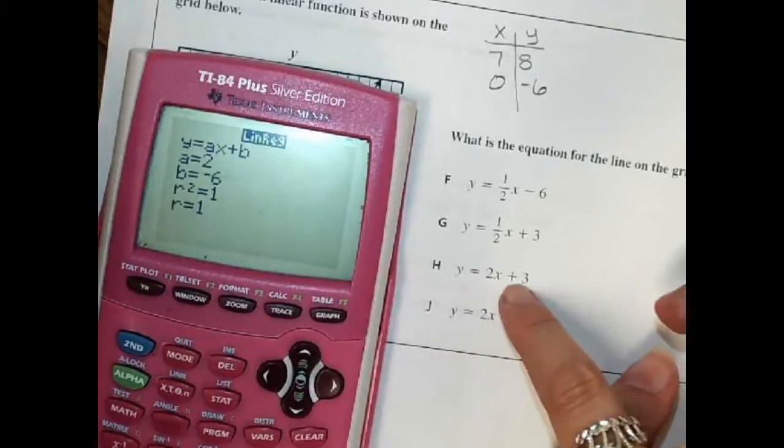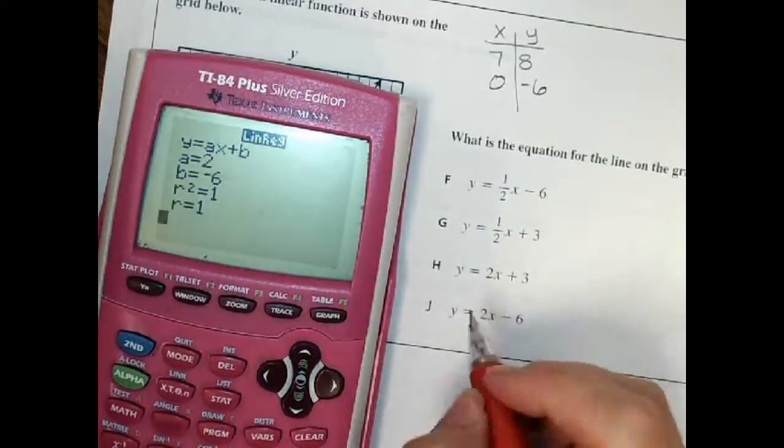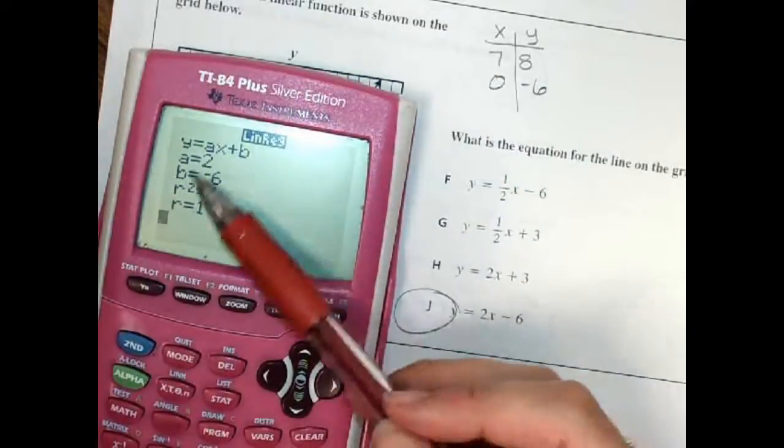Well, it's got 2, and it's got negative 6, so 2x and negative 6 is just this one right here. I didn't have to do a lot of extra work, I just used this stat function on my calculator again.